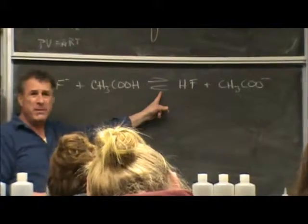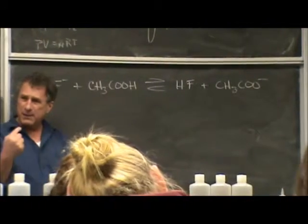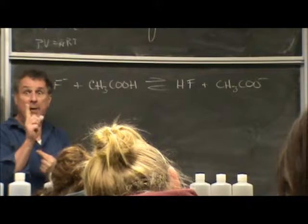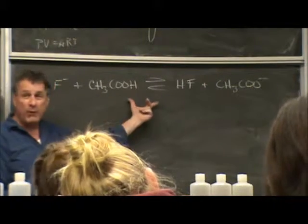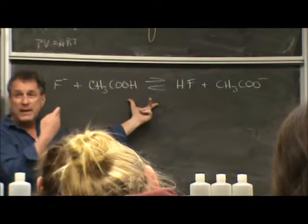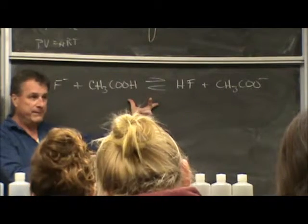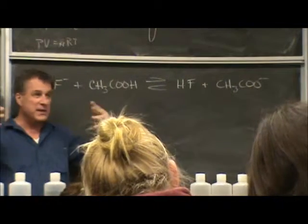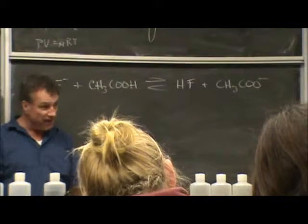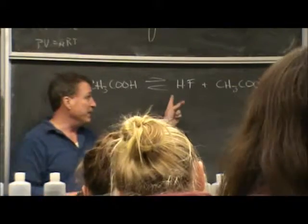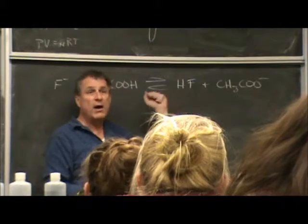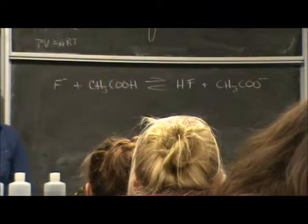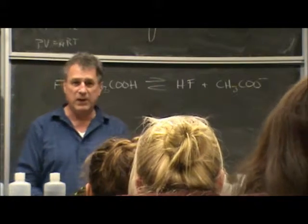This reaction is legitimate being written either way because it can go in both directions. However, keep in mind that however we write the reaction, the reactants are always on the left and the products are on the right. This is the same chemical reaction. It's going to end up with the same balance of stuff. Except that on this side, the acetate ion and the HF are the products. This side, they're the reactants. Because the reactants are always on the left and the products on the right.